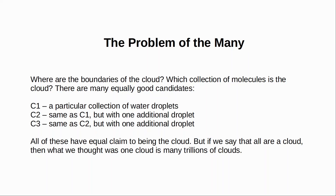On the other hand, any reason for denying that any of these is a cloud would seem to generalize to all the others. So then there's nothing that is the cloud. There is no cloud. This is the problem of the many. There are many objects that are equally good candidates for being the cloud, so either we accept that there are actually many clouds or that there is no cloud.